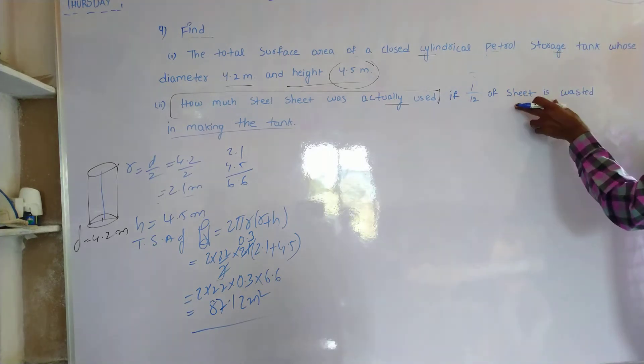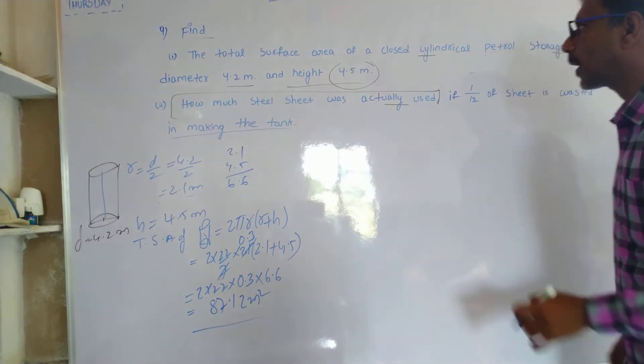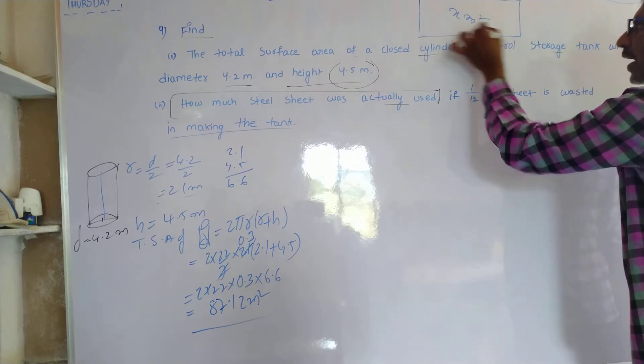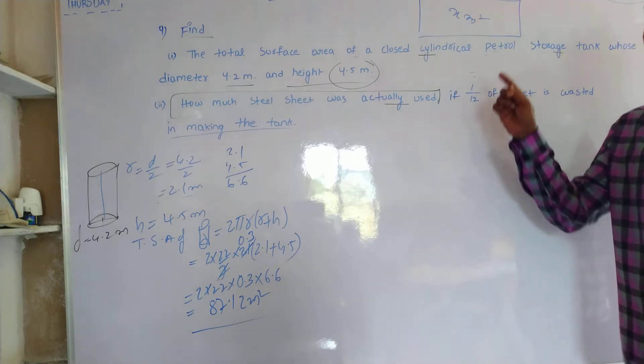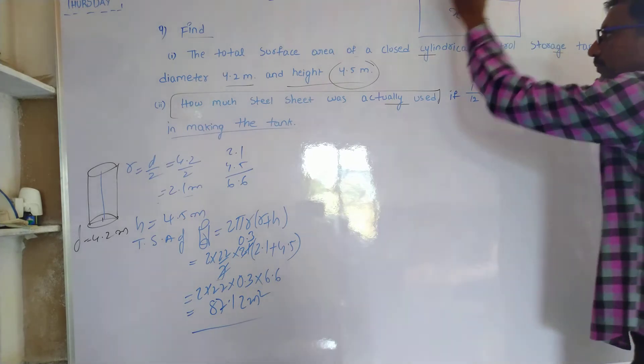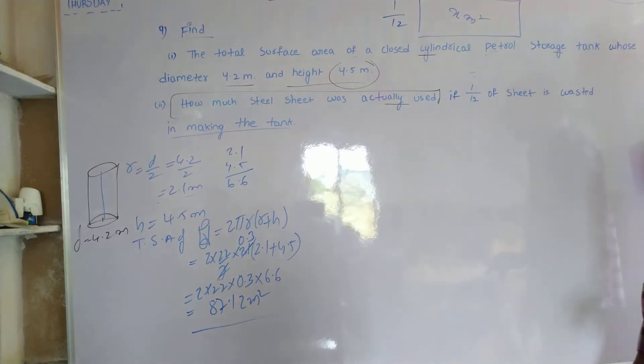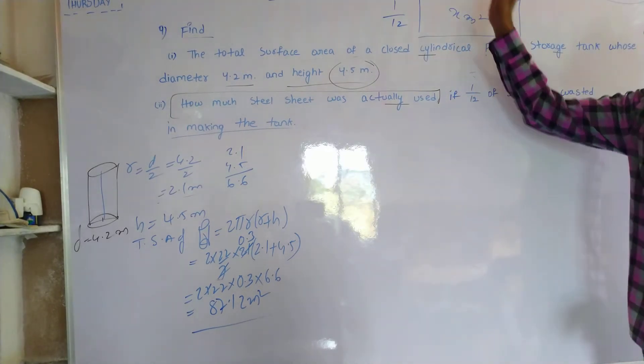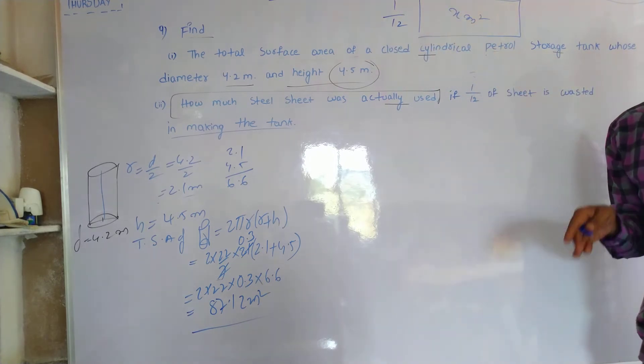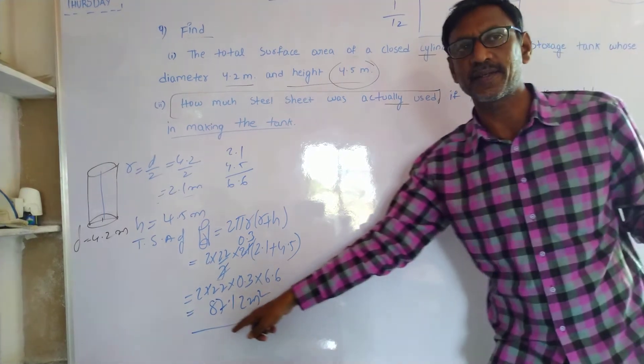1 by 12 of sheet was wasted in the making. Suppose this is my sheet, its area is X meter square. In the problem 1 by 12th part was wasted. And the original sheet area, 1 by 12th of X meters in this case, that helps to make the total surface area.